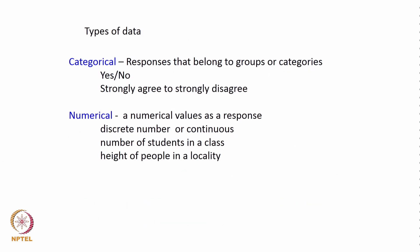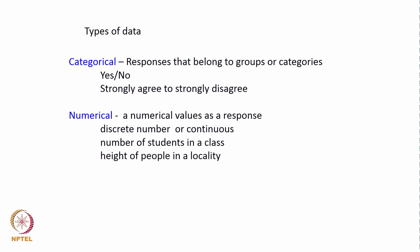How do we classify types of data? The first classification is categorical data and numerical data. The first two columns are categorical and the next three are numerical. Categorical data are responses that belong to groups or categories — they could be a yes/no type, or something like strongly agree to strongly disagree. Numerical data uses a numerical value as a response — it could be a discrete number or a continuous number, for example number of students in a class, or height of people in a locality.